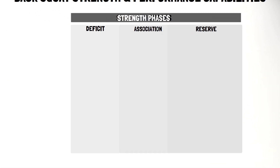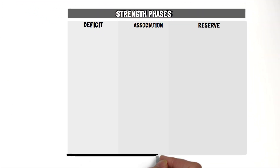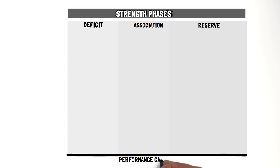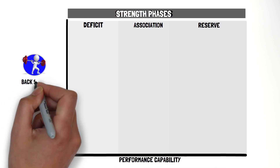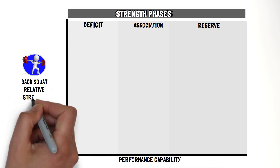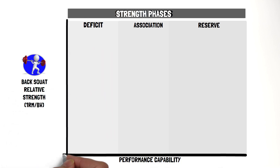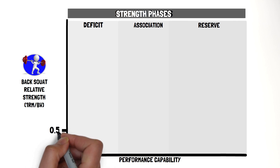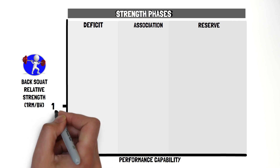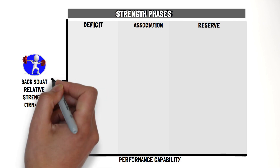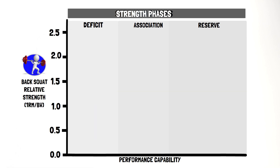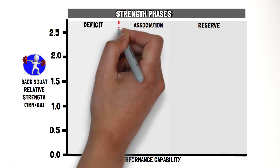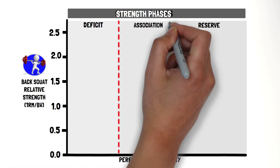After approximately five years of structured strength training, suggested relative strength levels for the back squat should be at a minimum of 0.7 for 11–12 year olds, 1.5 for 13–15 year olds, and 2.0 for 16–19 year olds.